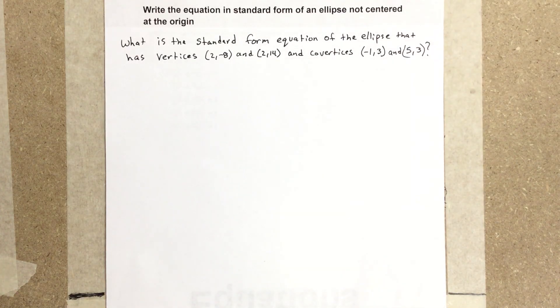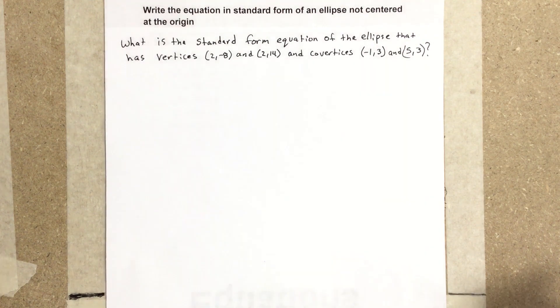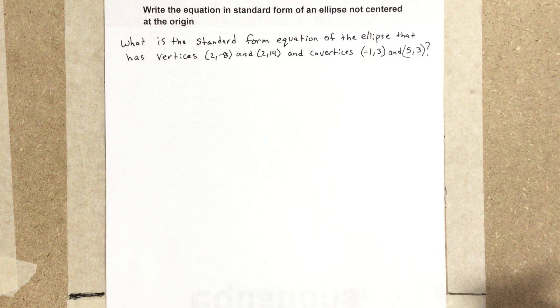In this video, we're going to write the equation in standard form of an ellipse not centered at the origin. What is the standard form equation of the ellipse that has vertices (2, -8) and (2, 14), and co-vertices (-1, 3) and (5, 3)?